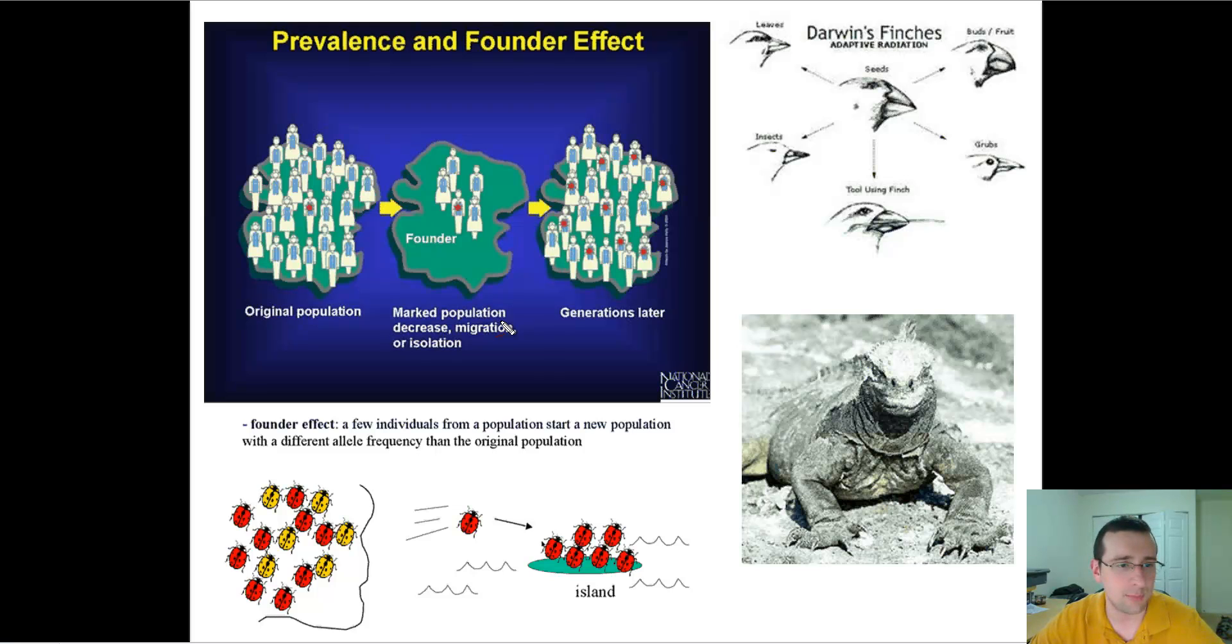Generations later, the composition of the population will pretty much mirror the composition of the initial population that moved into that area. Notice, for example, that the red gene was very, very rare among the original population. There was only one person with it. But as you move into a new population, and now he's going to be one out of five instead of one out of thousands, all of a sudden, as time goes by, the same ratio kind of stays if no other factors take place.